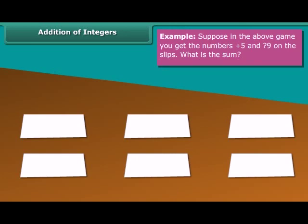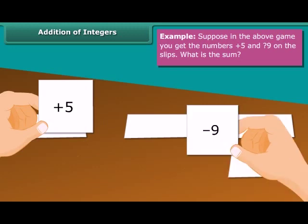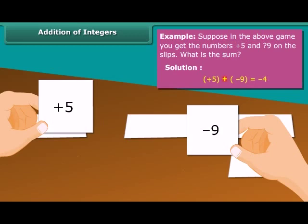Example: Suppose in the above game, you get the numbers plus 5 and minus 9 on the slips. What is the sum? Plus 5 plus minus 9, which equals minus 4.